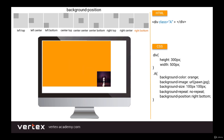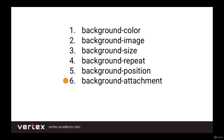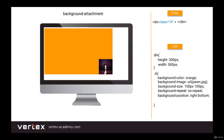Now let's try another property: background-attachment. This property is used to set the behavior of the background image when scrolling the page. It only has two values: scroll and fixed. The fixed value specifies that the image will be fixed in place, and scroll means it will scroll with the page. Pretty simple — let's write background-attachment: fixed and see what happens.